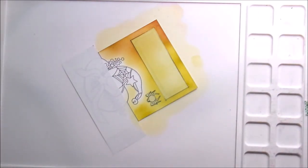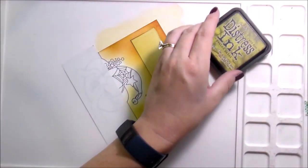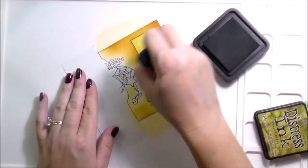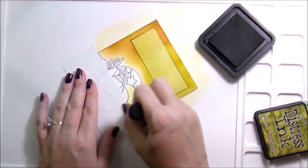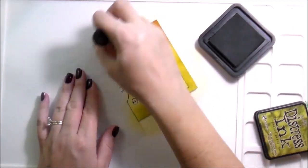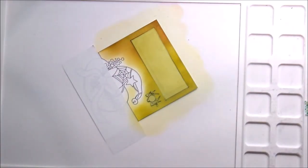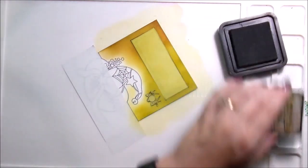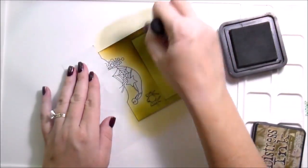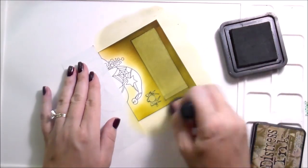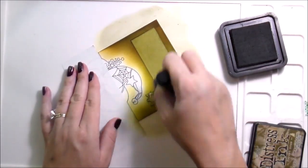Here, I'm using the Bitty Blending Brush from Rabbit Hole Designs to get in between that small space where the hat kind of curves down. And these are super, like, I really like them for getting into tight areas or concentrated color. I'm a super fan.